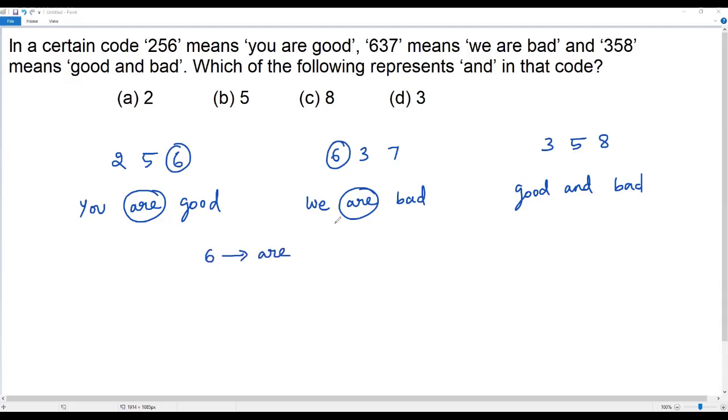Now let's compare the second information and the third one. What do we find in common? We find bad in common. So in code, what do we find in common? So here we have 637, here we have 358, we find 3 in common. So clearly, 3 represents bad.